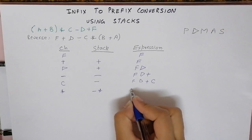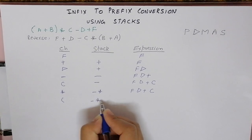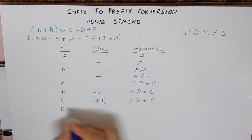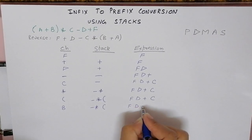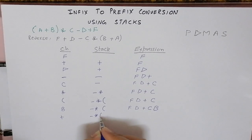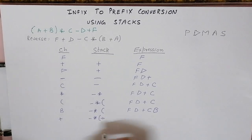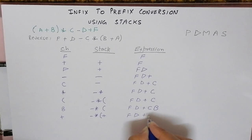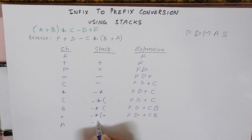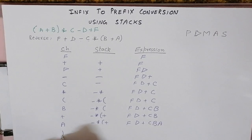After multiplication, we encounter an opening bracket, which also becomes part of the stack, not the final expression. Then we encounter B, which is an operand and goes into the expression. Next we encounter plus — since we have an opening bracket in the stack, plus does not interact with elements before the bracket, so plus is pushed onto the stack. Then we encounter operand A, which becomes part of the expression: the expression is now F D plus C B A.